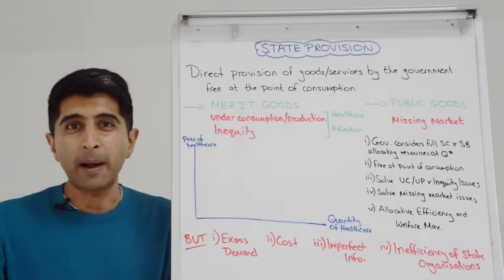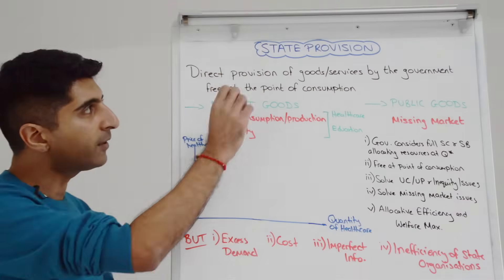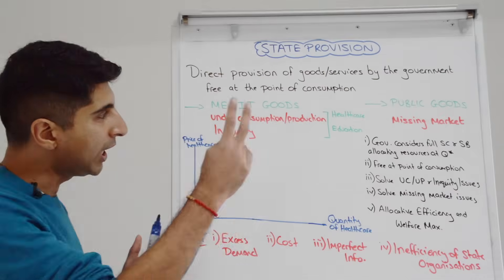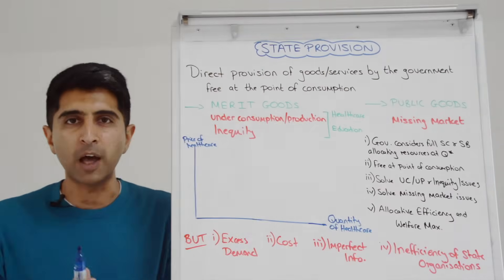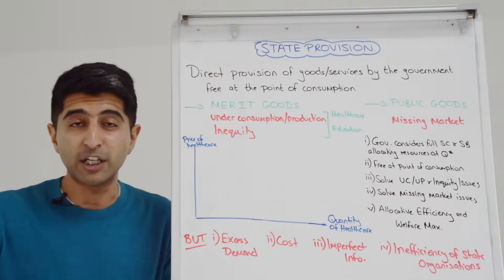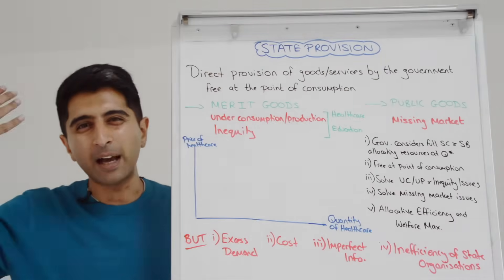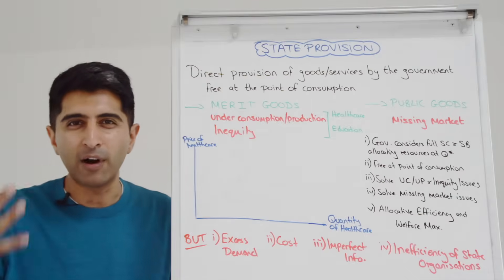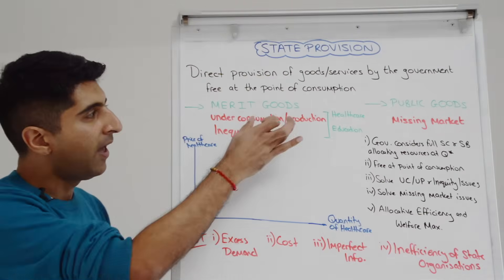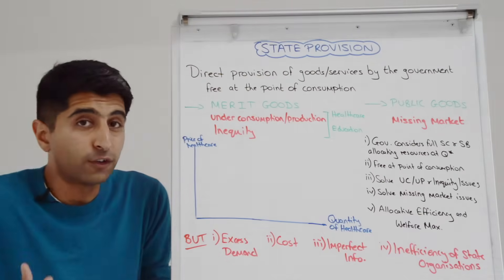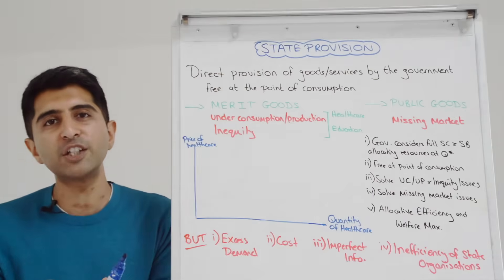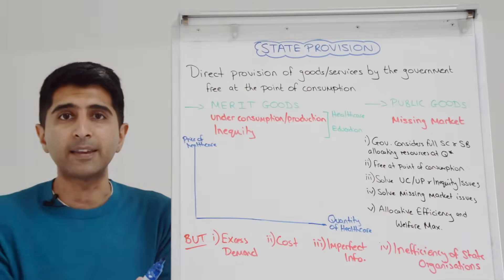You can talk about solving merit good market failure with state provision, but be careful. We know with merit goods they are under-consumed and under-produced, and state provision in theory can fix that, given that the government will account for all externalities and is more likely to hit the social optimum. But there's got to be more than just under-consumption and under-production taking place.